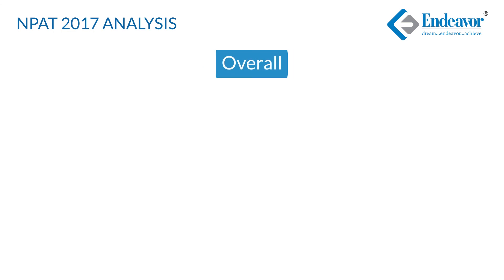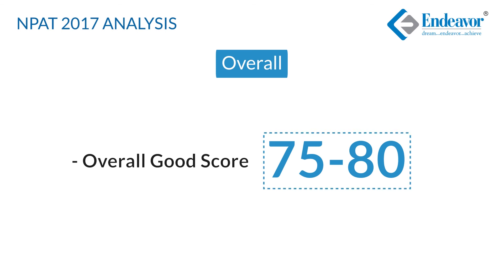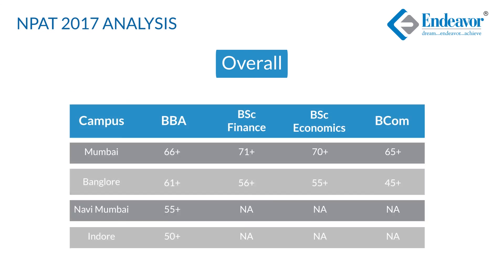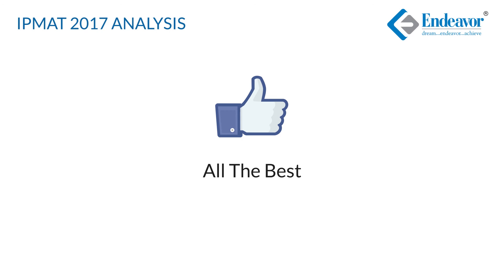Looking at the overall scenario, a good score in this exam can be somewhere around 75 to 80. Since NMIMS does not give official scores but only rankings, we have provided a table listing courses like BBA, BSc Finance, BSc Economics, and BCom Honours, along with the different campuses where these courses are offered and estimated scores for different courses at different campuses. Wishing you all the best for your final results. Thank you.